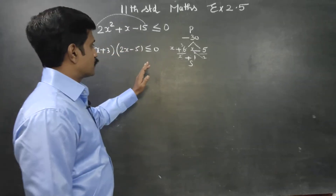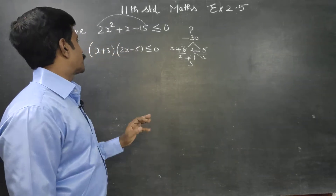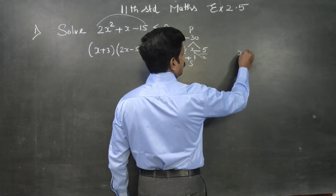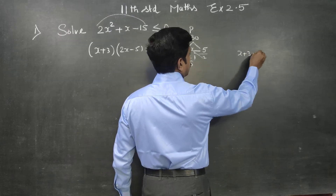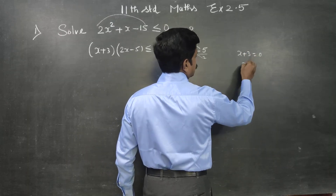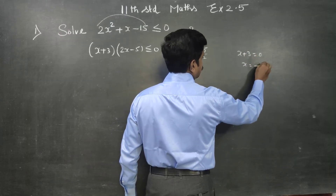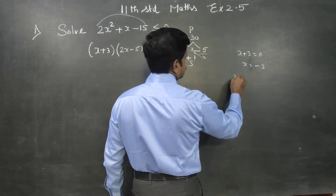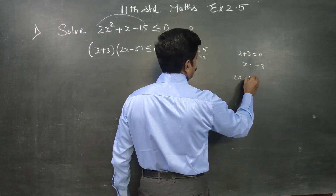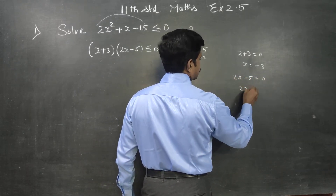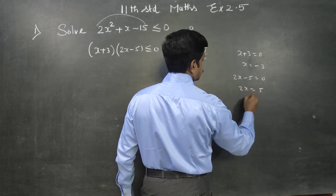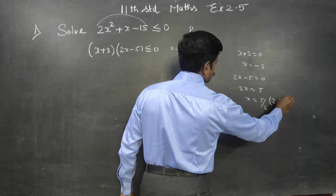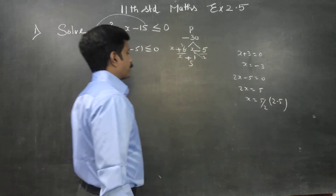Setting each factor to zero: x + 3 = 0 gives x = −3. And 2x − 5 = 0 gives 2x = 5, so x = 5/2, which is approximately 2.5.